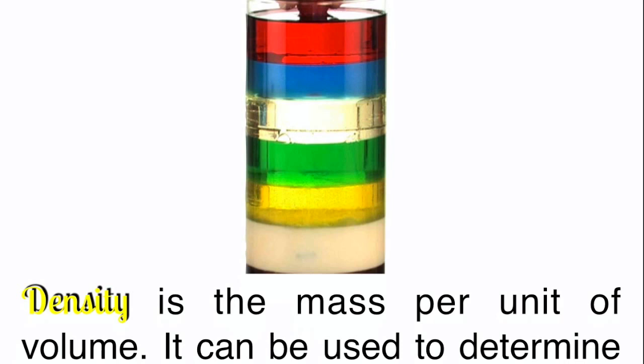In this picture you can see a density column, liquids layered by their density. Density means how closely packed together the atoms in a substance are. The closer they are, the higher the density. The further they are, the lower the density. And that can determine whether something will sink or float in water.